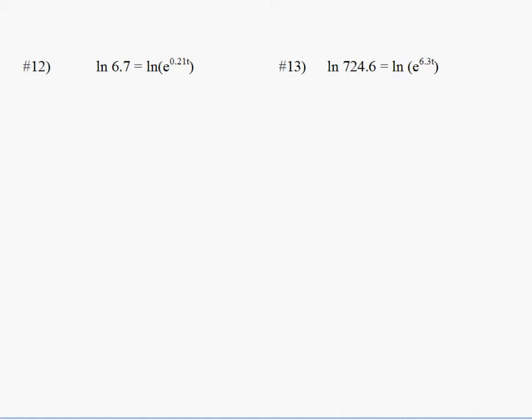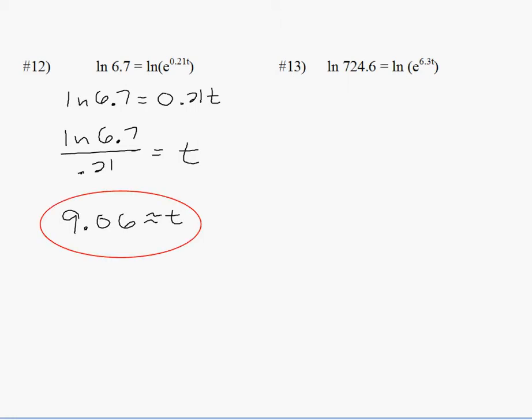Number 12 already has the log there. So the right side simplifies since the natural log and the base of e have the same base to the exponent, 0.21t. Divide both sides by 0.21t. I'm sorry, by 0.21, leave the t by itself. Your calculator will give you a 9.06.